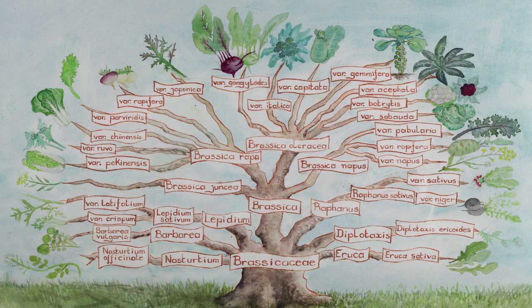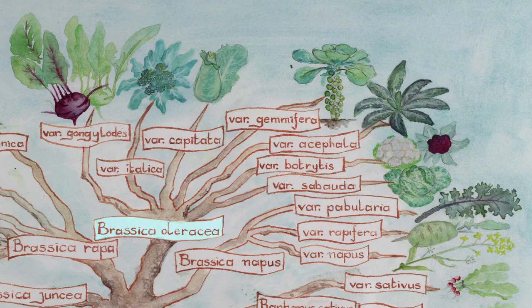Kale is a member of the Brassica oleracea species and the acephala subspecies. The Brassica oleracea species also includes kohlrabi, broccoli, cabbage, brussel sprouts, cauliflower, and the Savoy cabbage.